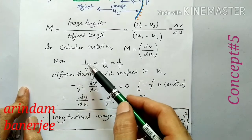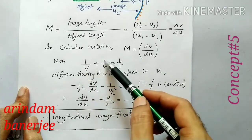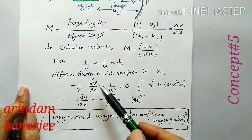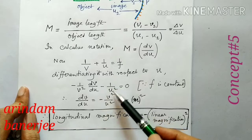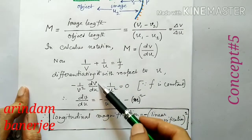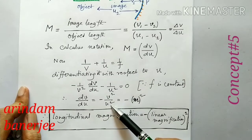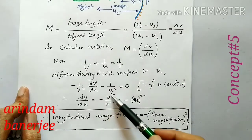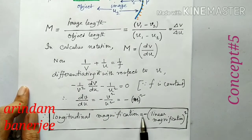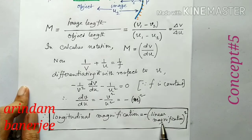Now, on differentiating the mirror equation — 1/v plus 1/u equal to 1/f — we get minus 1/v² times dv/du minus 1/u² equals 0. Since f is constant, dv/du on simplification gives minus v² by u². That is, minus m². So longitudinal magnification is minus of the square of the linear magnification.